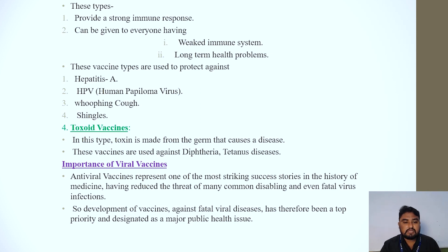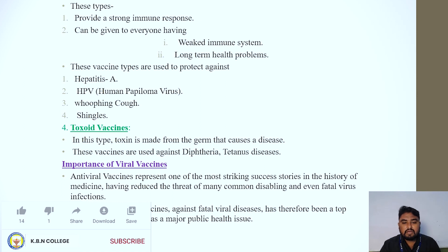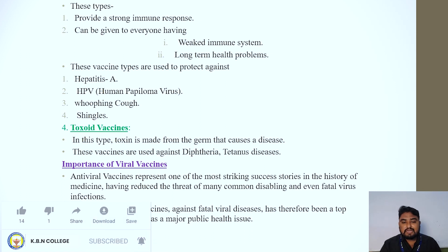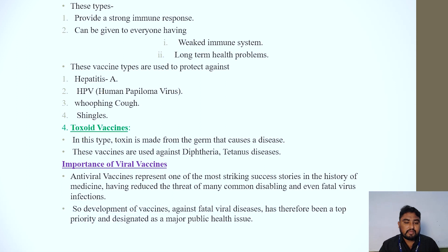The fourth type is toxoid vaccines. In this type, the toxin is made from the enzyme that causes the disease. These vaccines are used against diphtheria and tetanus. The importance of viral vaccines: antiviral vaccines represent one of the most significant stories in the history of medicine, having reduced the threat of many common, disabling, and even fatal viral infections. Development of vaccines against fatal viral diseases has therefore been a top priority and a major public health issue.